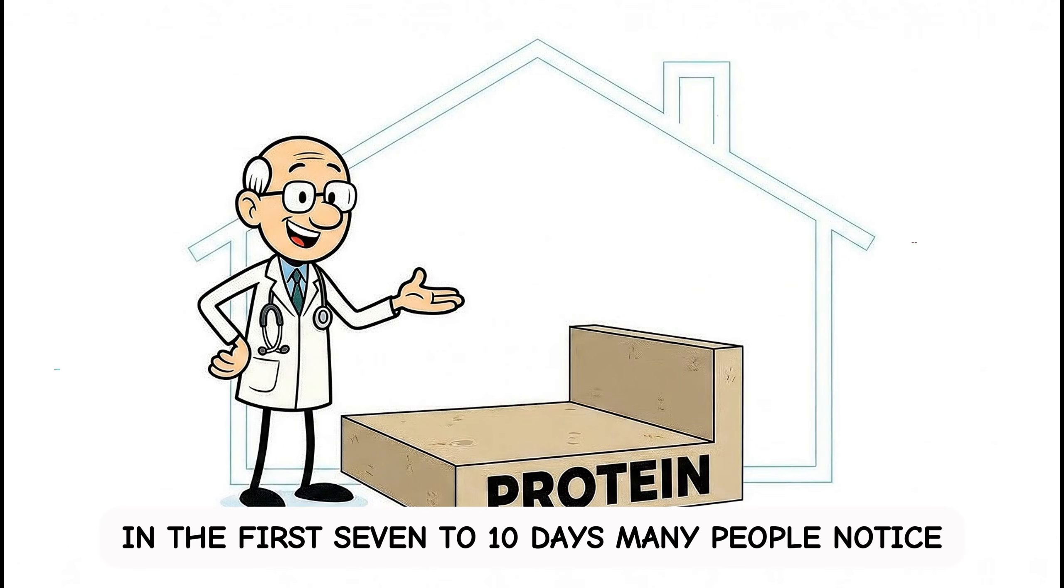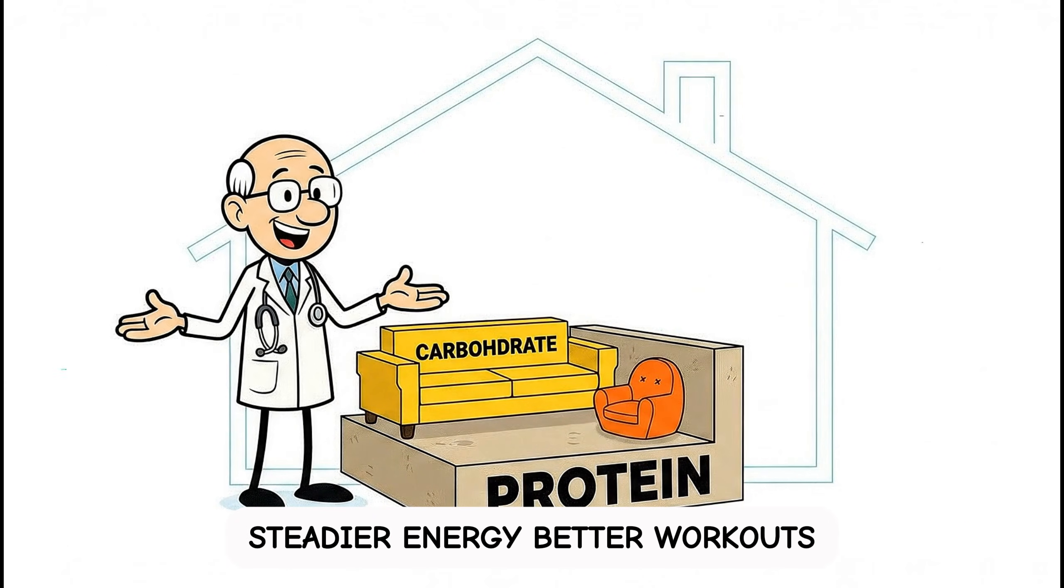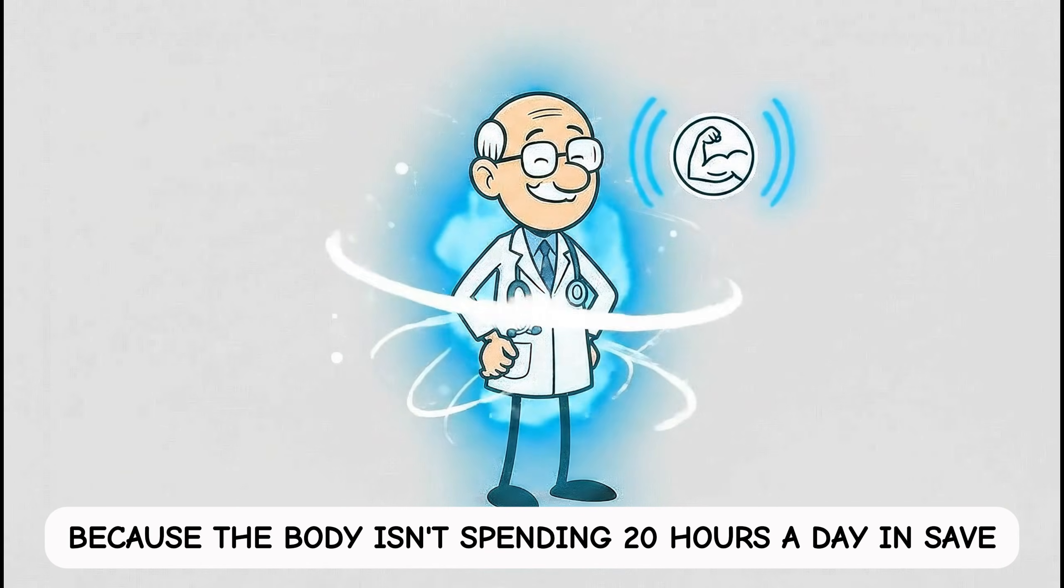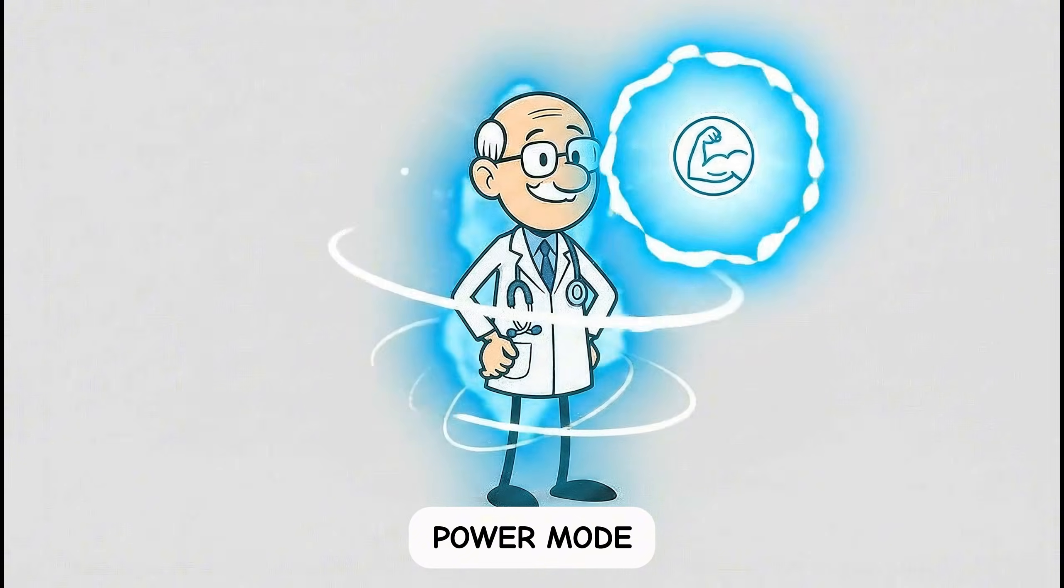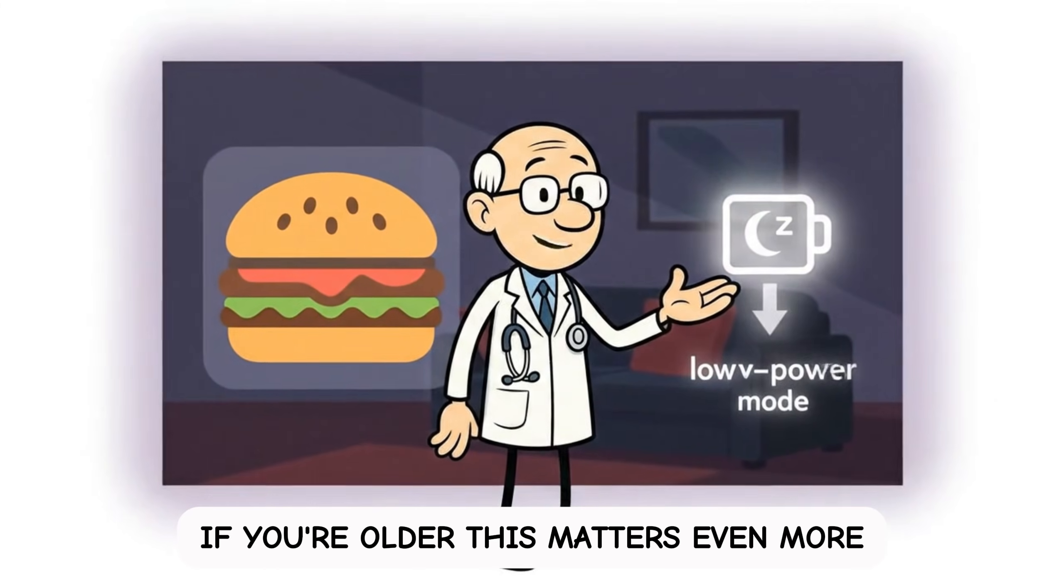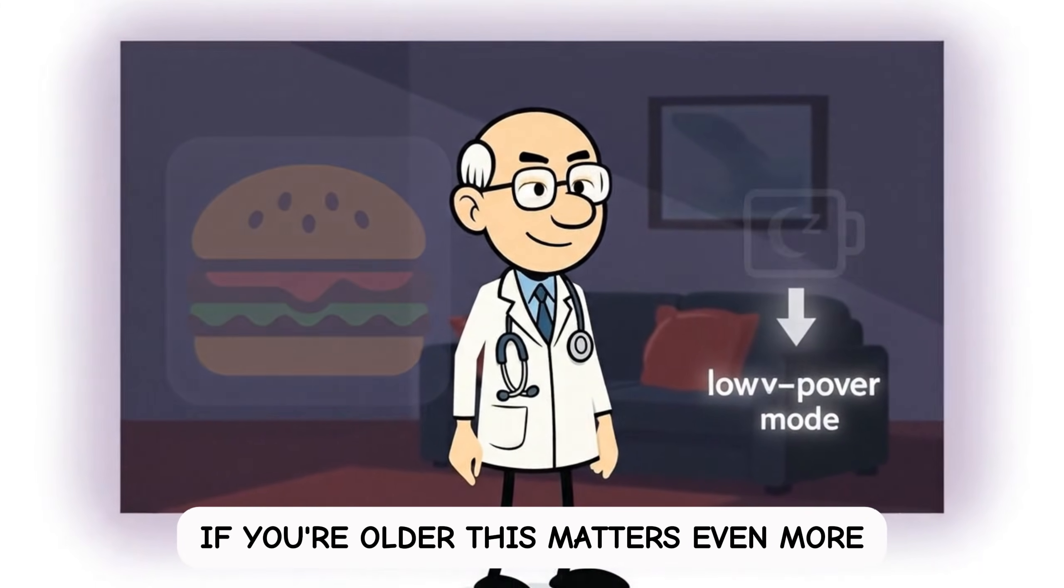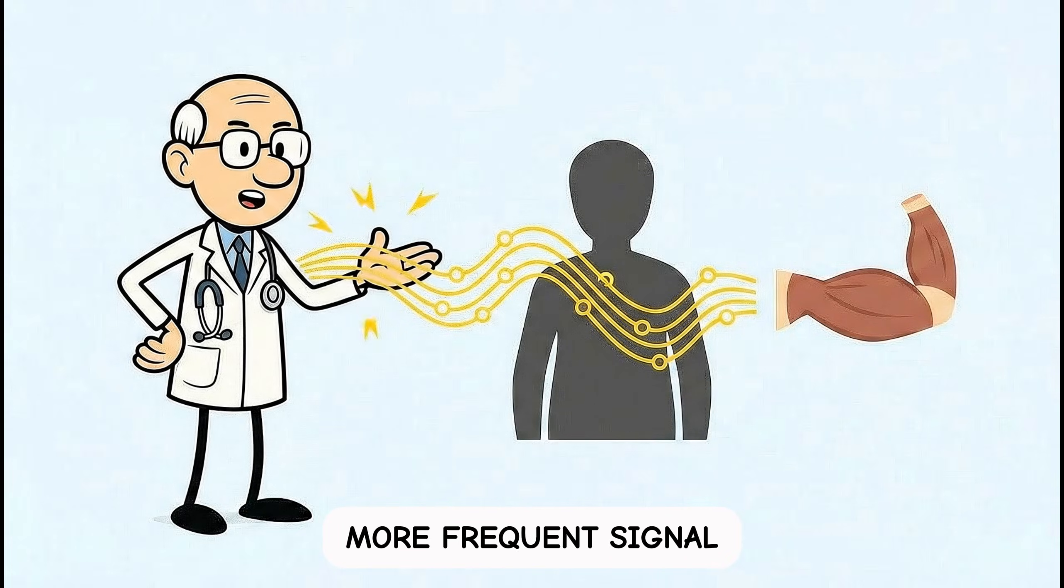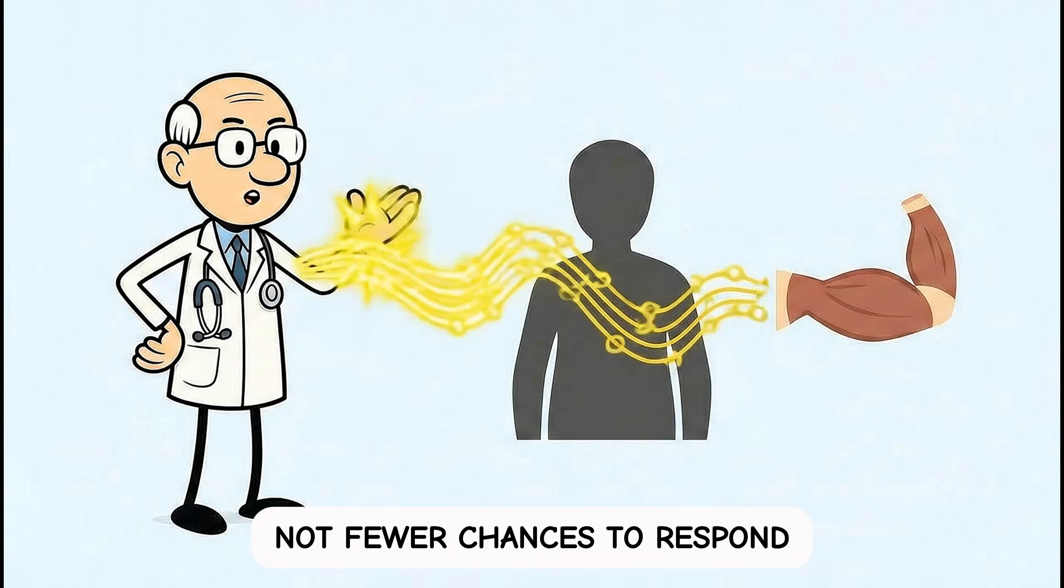In the first seven to ten days, many people notice steadier energy, better workouts, and fewer late-night cravings, because the body isn't spending 20 hours a day in save-power mode. If you're older, this matters even more, because anabolic resistance means your muscles need a louder, more frequent signal, not fewer chances to respond.